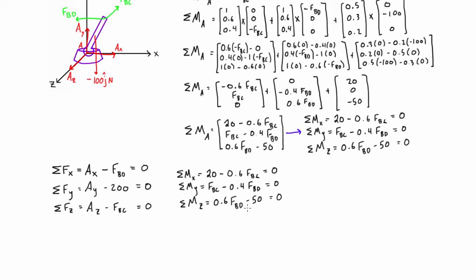The easiest one that I'm seeing right now will be FBD. We can just use this equation, simply rearrange to bring the 50 over to the other side and divide that 50 by 0.6. We can do the same thing here for FBC. We'll just bring this over to the other side and then we'll have 20 divided by 0.6. And now what we do is we just need to substitute these values into the other three equations and we'll figure out what our reactions are at A.